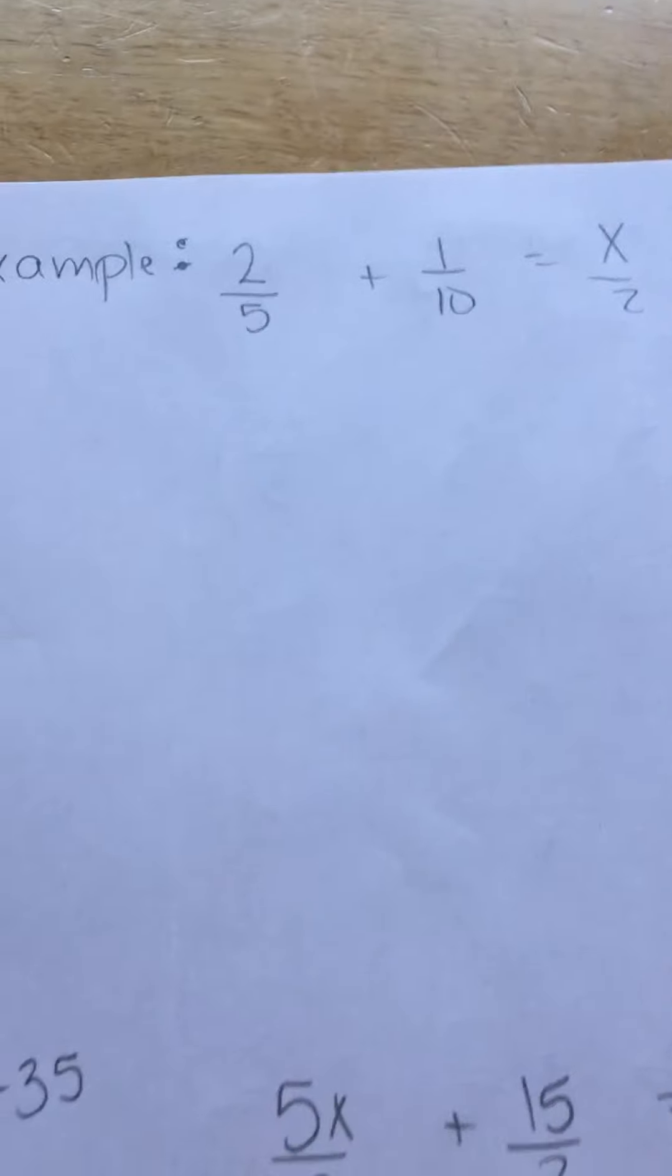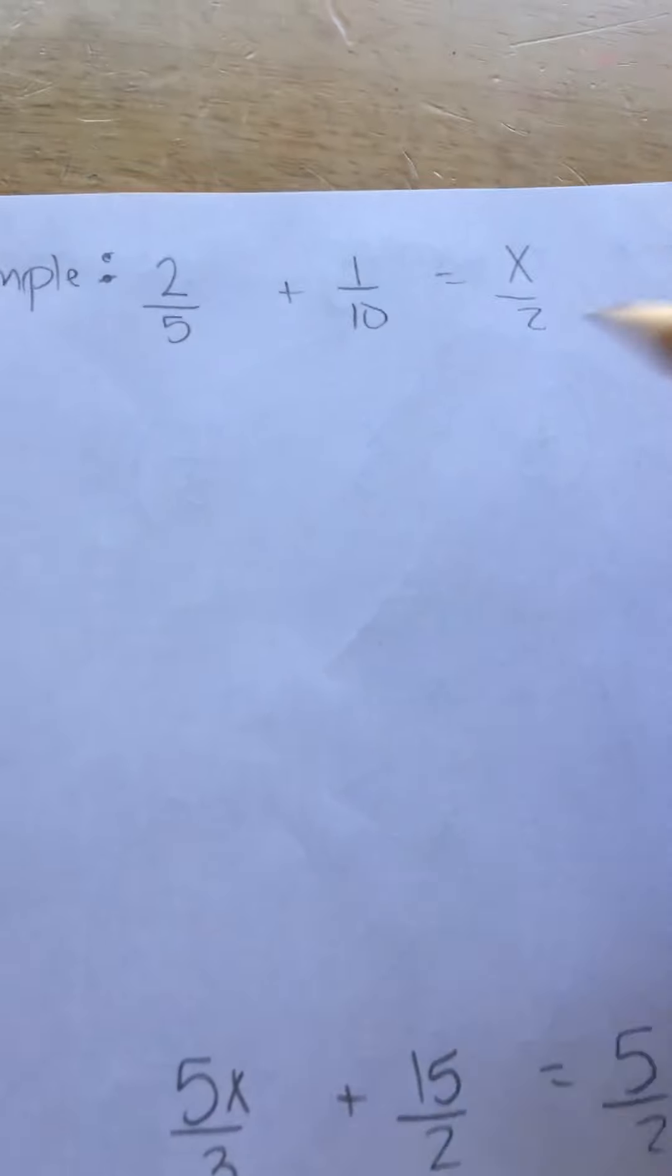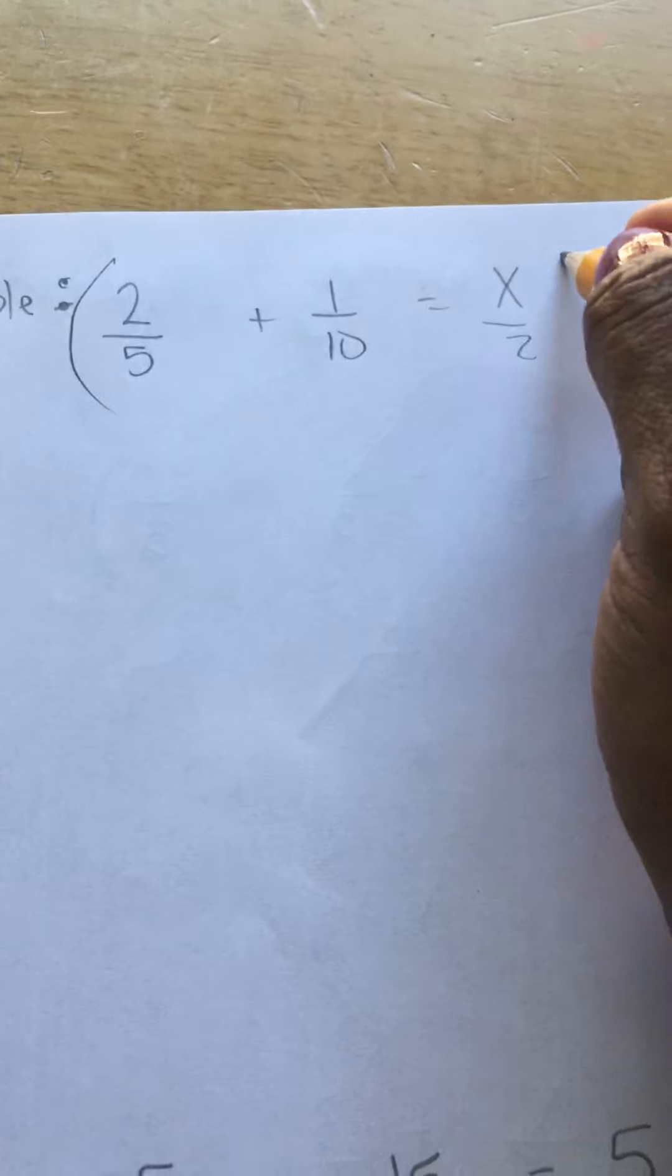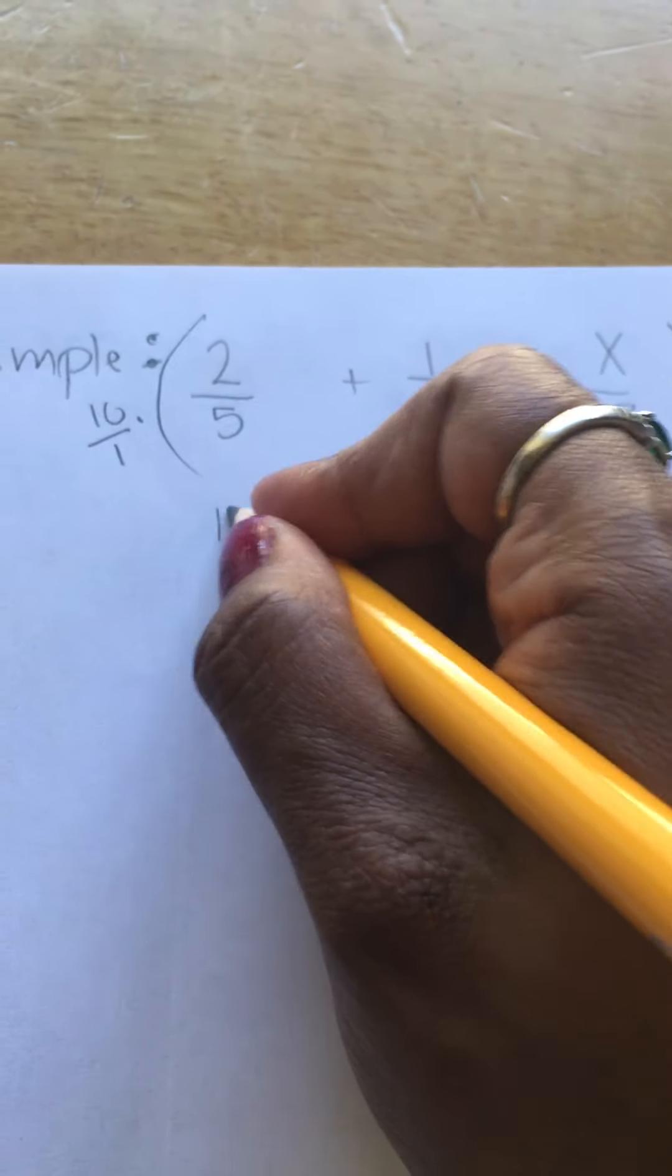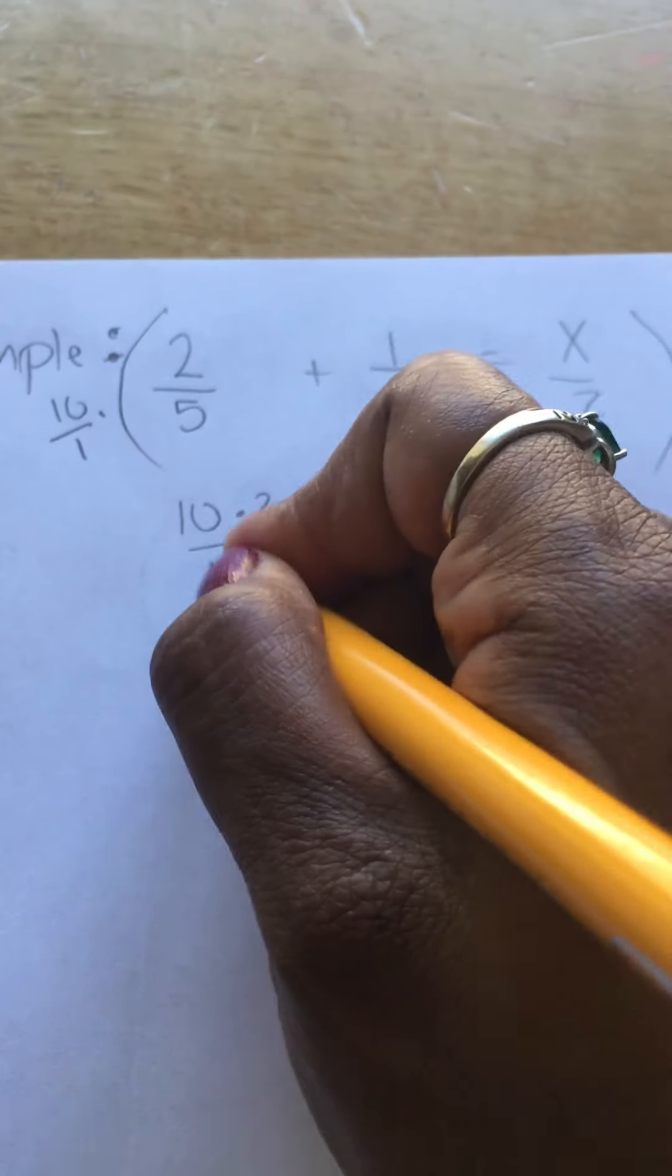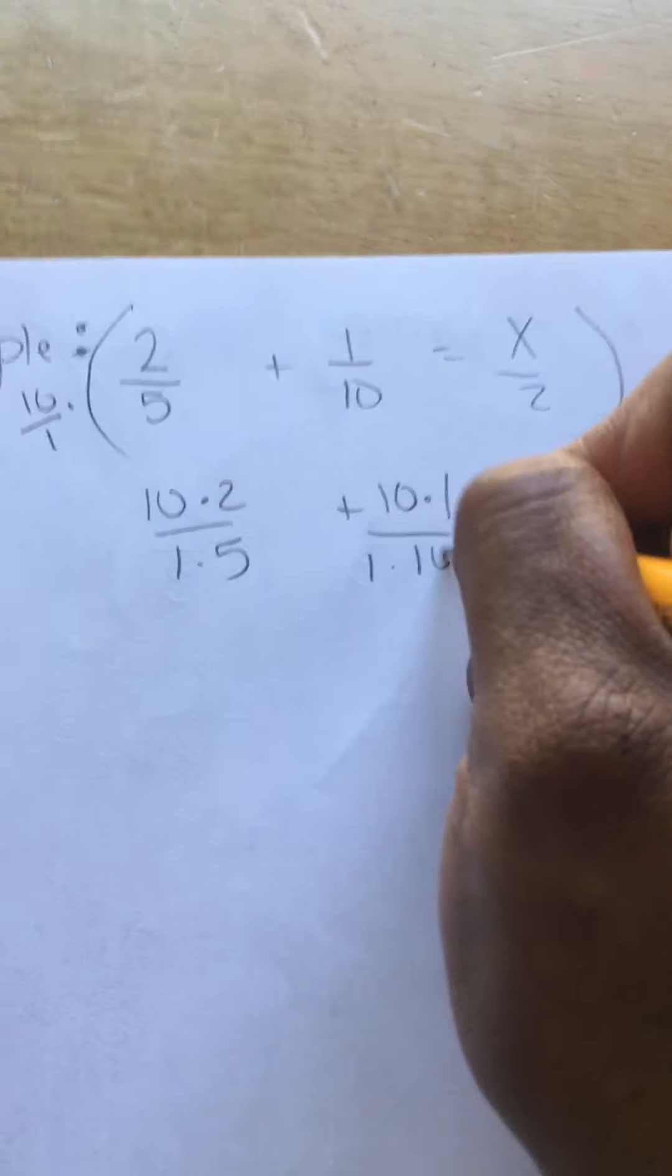Let's do another example. So I made this one up. 2 fifths plus 1 tenth equals x over 2. Multiply everything by 10 over 1. And we get 10 times 2 over 1 times 5 plus 10 times 1 over 1 times 10.